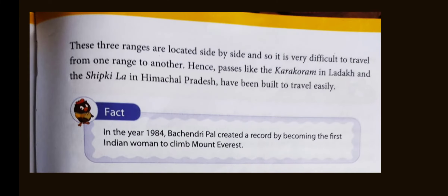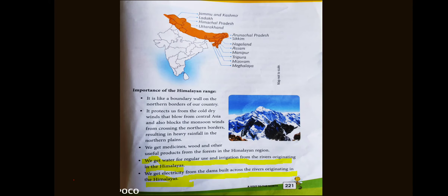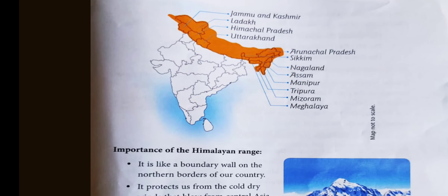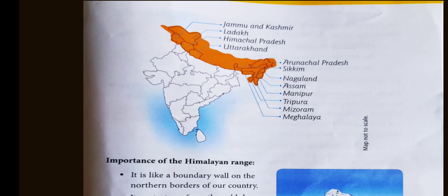These three ranges are located side by side, and so it is very difficult to travel from one range to another. Hence, passes like the Karakoram in Ladakh and the Shipki La in Himachal Pradesh have been built to travel easily. As you can see, there is one range, two ranges, three ranges, all in a single line.